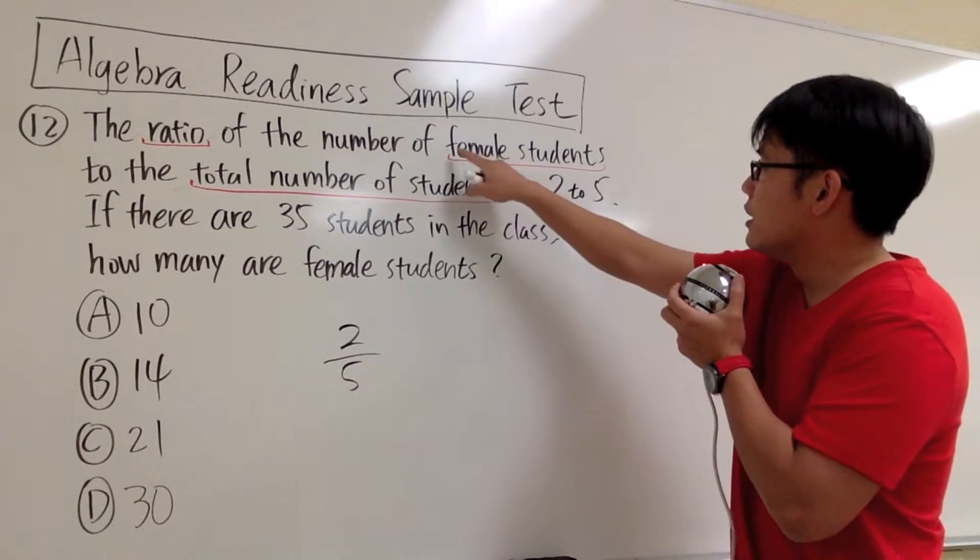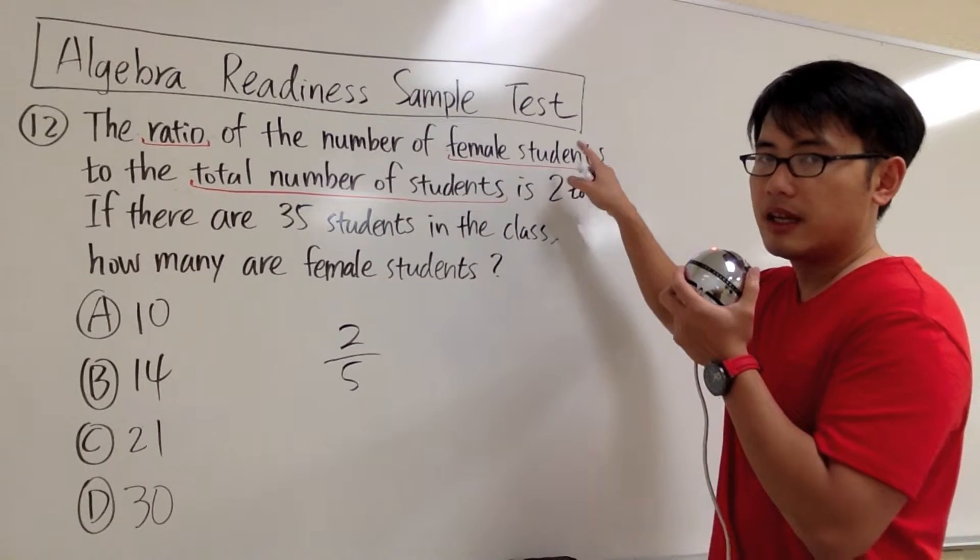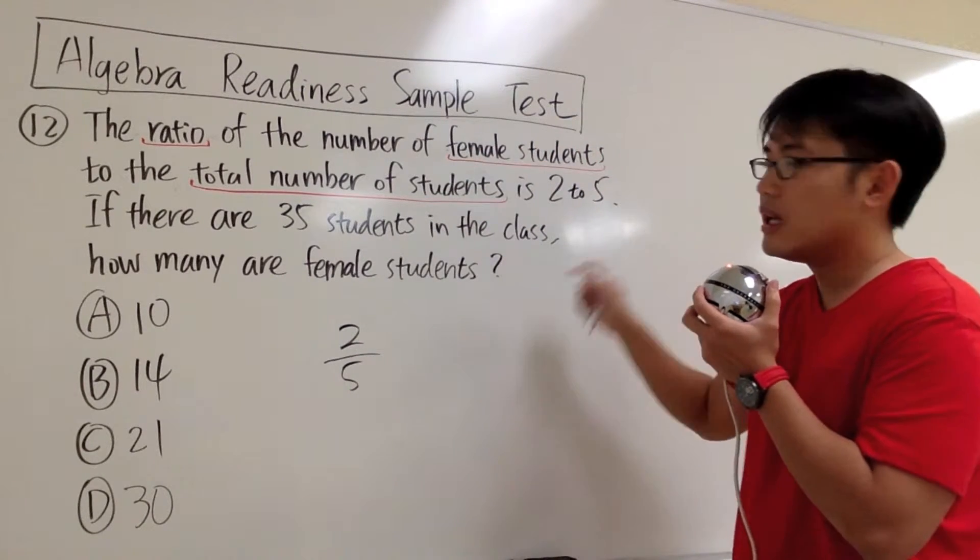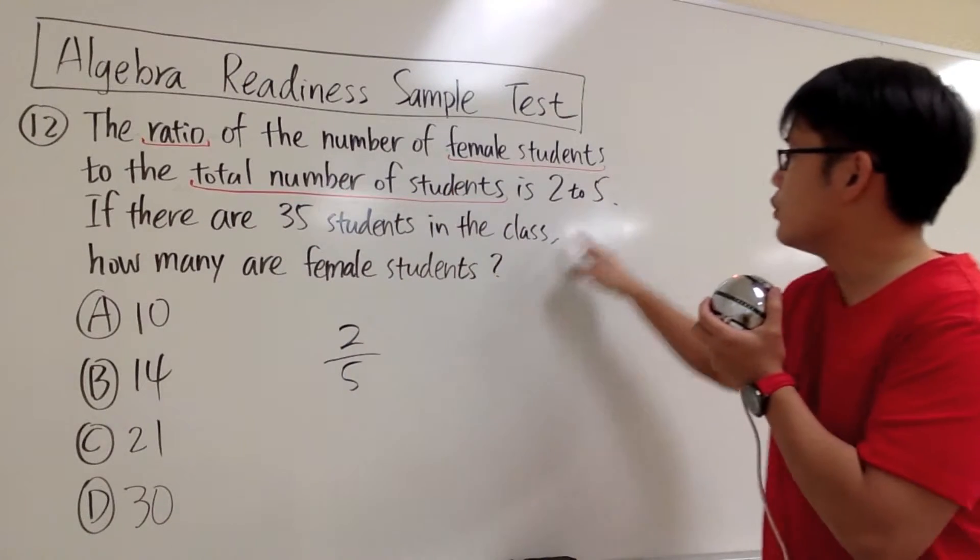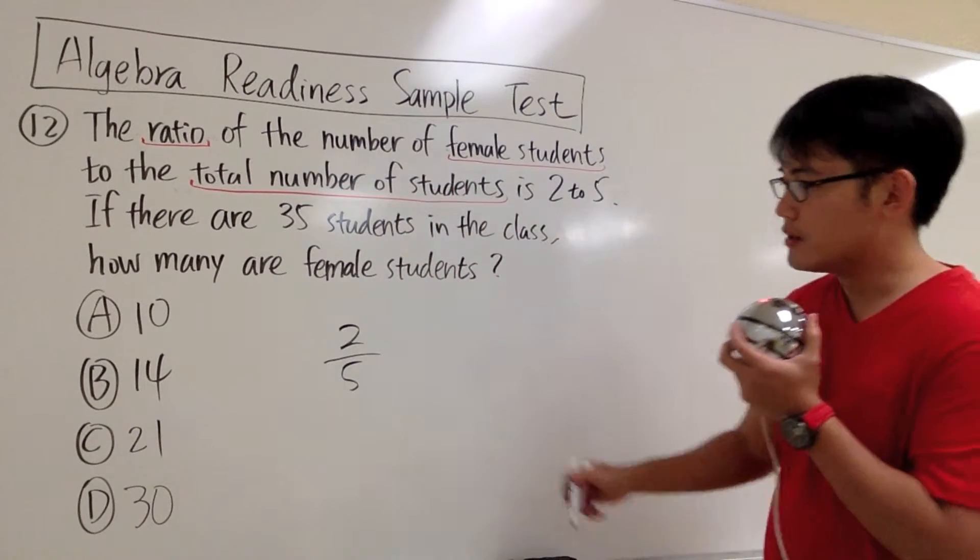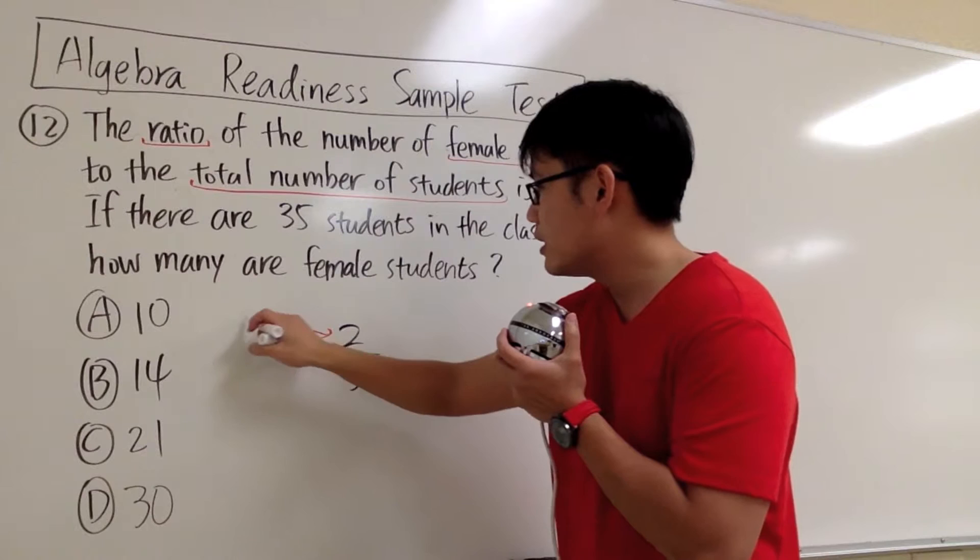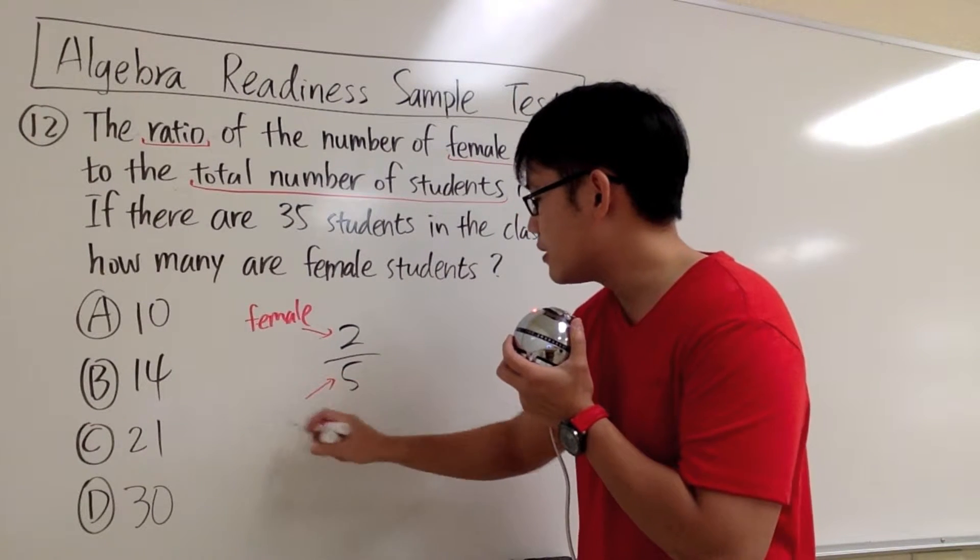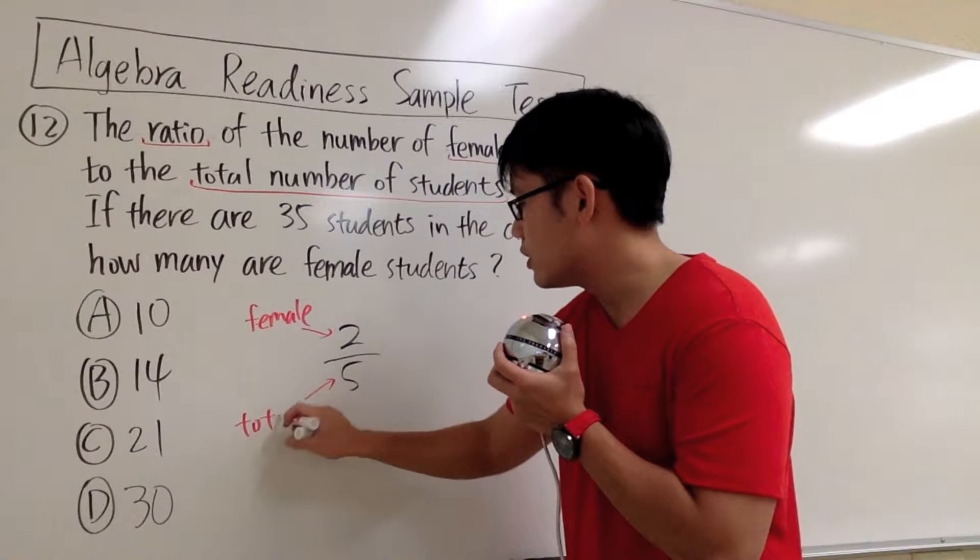As you can see, female comes first in the sentence. That means the 2 will be associated with the female students, and the total number of students will be associated with the 5. I can indicate the 2 here is for female, and the 5 here is for the total.